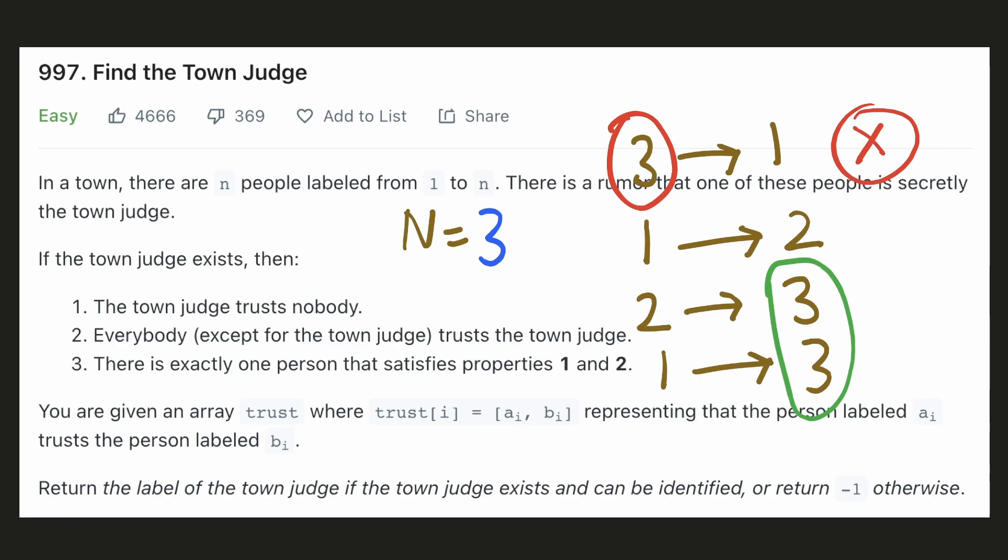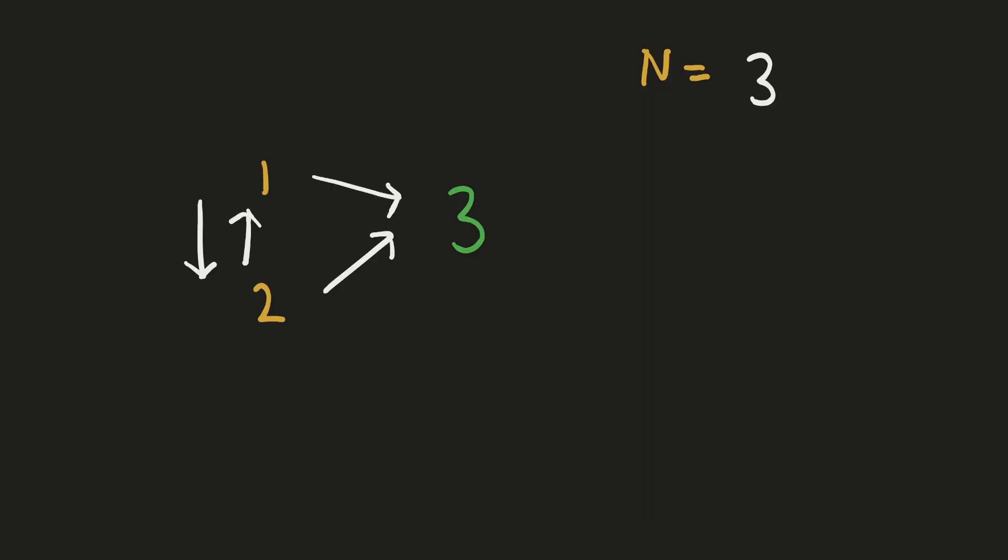Let's come up with an intuitive solution for this. Let's identify some properties of the town judge using this small example. Here person 3 is the town judge because everybody else trusts it and person 3 does not trust anybody else. We also have other trust relationships in the town, for example person 1 trusts person 2 and person 2 trusts person 1, but this will not affect the selection of the town judge.